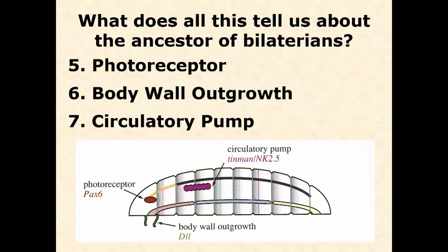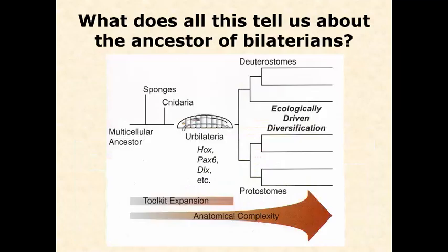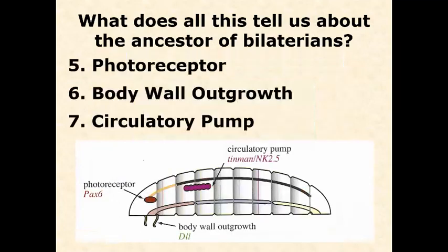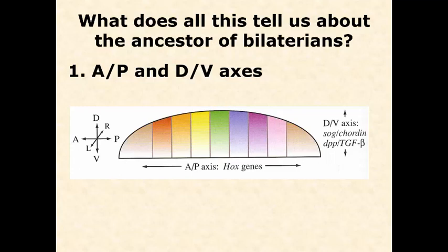The bilaterian ancestor also had a circulatory pump — essentially a heart, though the definition varies. Some hearts are simple pulsing vessels with no chambers, while others are complex with closed circulatory systems as in higher vertebrates. The key point is that some form of circulatory pump was present in the common bilaterian ancestor.